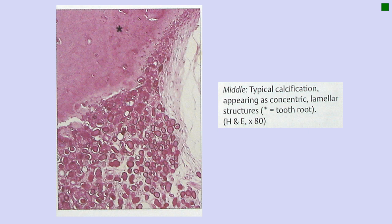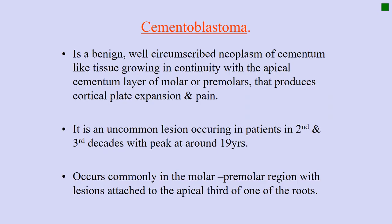CEOT is a benign odontogenic tumor of epithelial origin which presents as an asymptomatic swelling. Radiographically it is a mixed lesion, but microscopically it looks very similar to a malignant lesion. Even though it shows features of pleomorphism microscopically, it has been proven to be benign. As a benign tumor, the treatment is again a conservative approach.